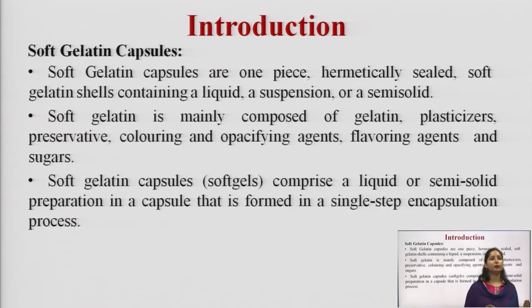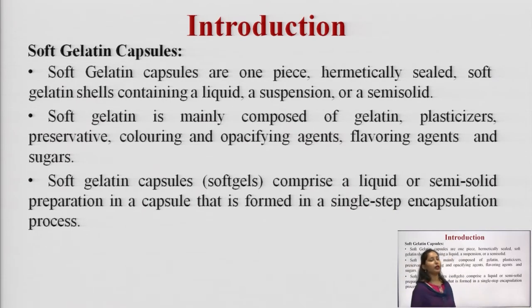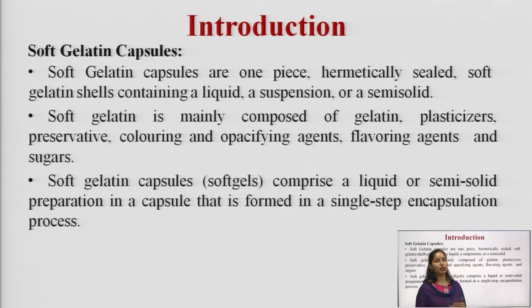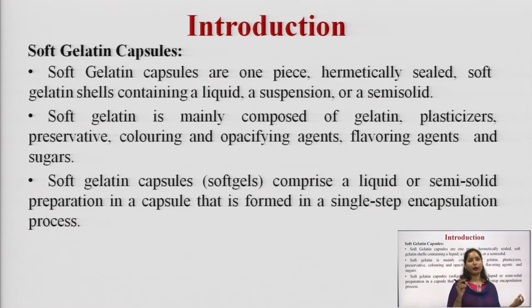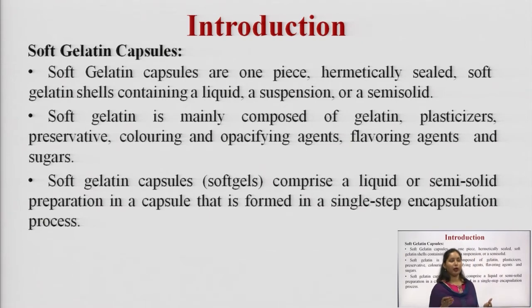A soft gelatin capsule is mainly composed of gelatin, plasticizer, preservatives, coloring and opacifying agents, flavoring agents, and sugar. Soft gelatin capsules comprise a liquid or semi-solid preparation in a capsule that is formed in a single-step encapsulation process. Basically, soft gelatin capsules are one-piece hermetically sealed capsules mainly used for enclosing liquid, semi-solid, or semi-solid preparations.